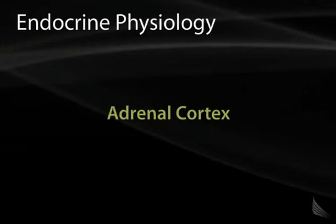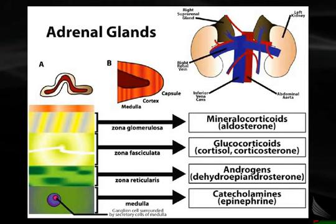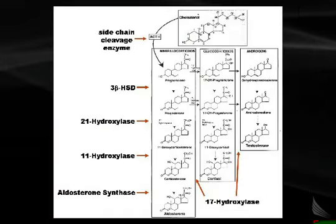In this section we'll cover the regulation of the adrenal cortex. The adrenal glands sit on top of the kidney and have both the cortex and the medulla. The cortex is divided into three zones: zona glomerulosa, which secretes aldosterone; zona fasciculata, which secretes glucocorticoids; and zona reticularis, which secretes androgens. Underneath the cortex is the medulla, which secretes catecholamines, covered in a separate section.